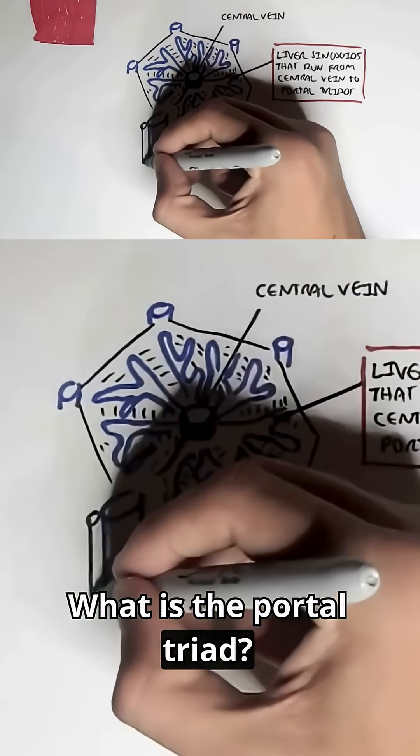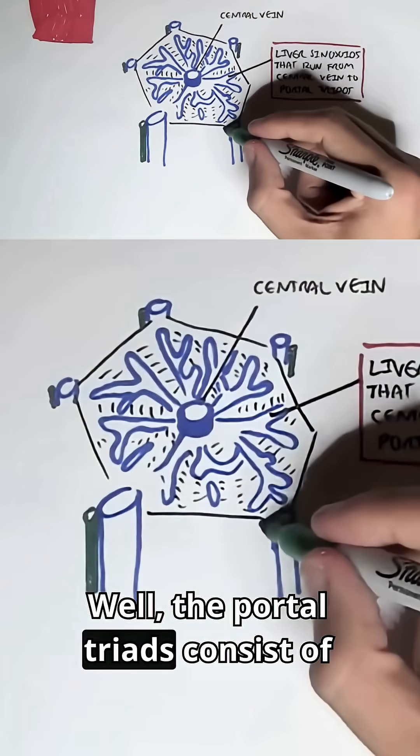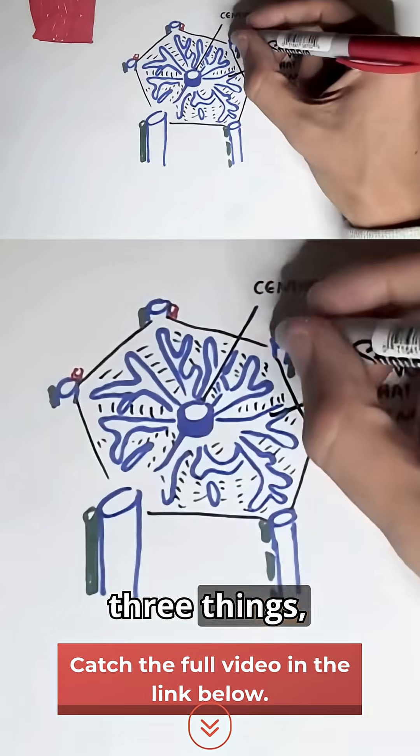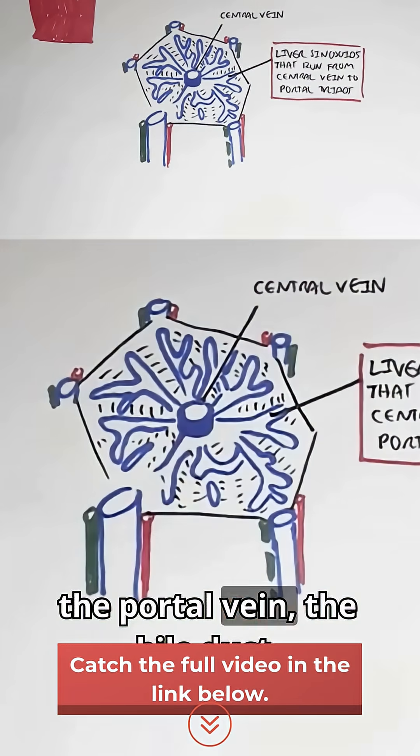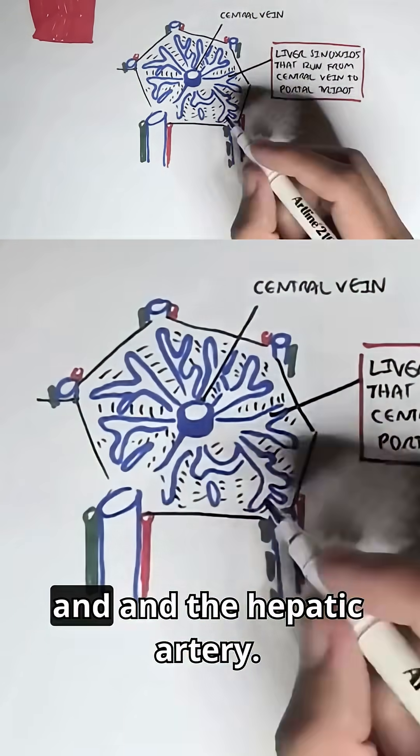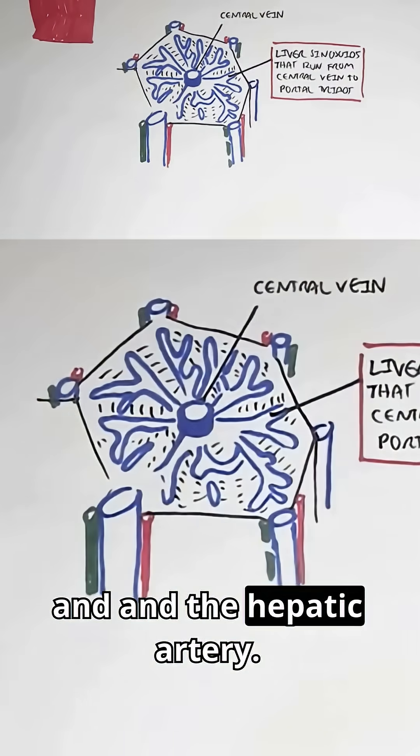What is the portal triads? Well, the portal triads consist of three things: the portal vein, the bile duct, and the hepatic artery.